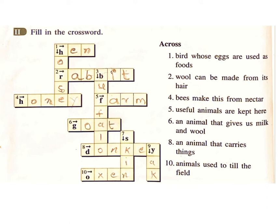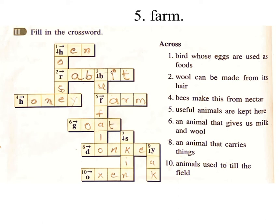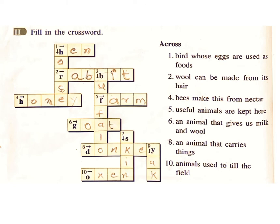Exercise 2: Fill in the crossword. Across — 1: Bird whose eggs are used as food. Answer: Hen. 2: Wool can be made from its hair. Answer: Rabbit. 4: Bees make this from nectar. Answer: Honey. 5: Useful animals are kept here. Answer: Farm.